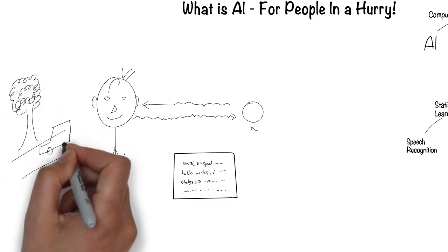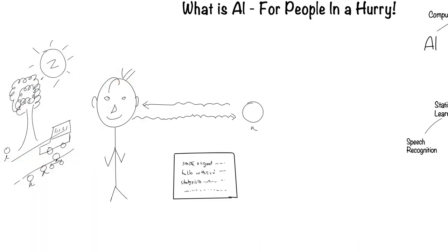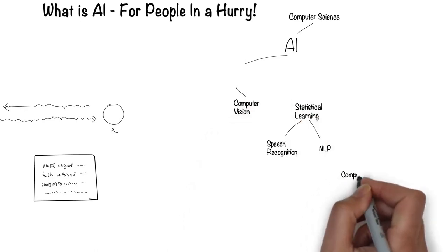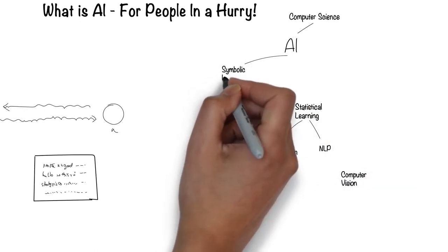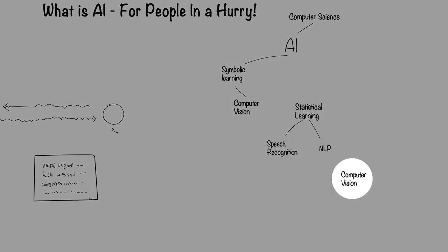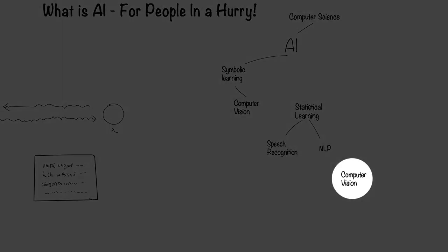Humans can see with their eyes and process what they see. This is the field of computer vision. Computer vision falls under the symbolic way for computers to process information. Recently, there's been another way, which I'll come to later.